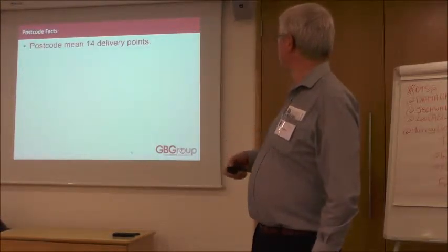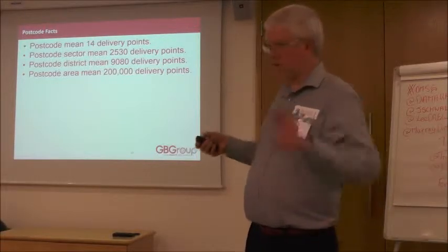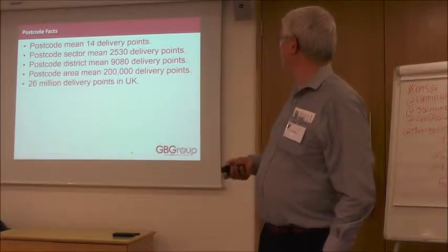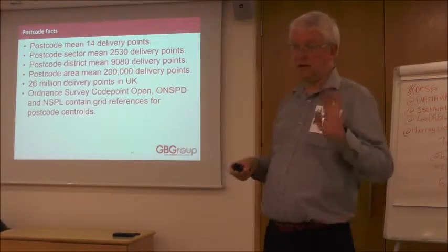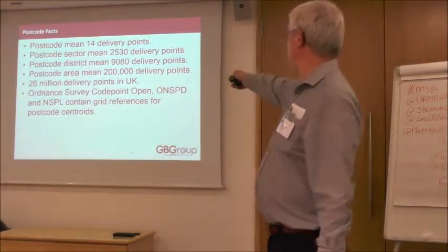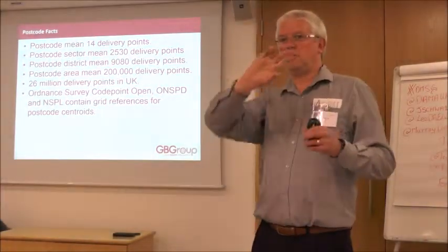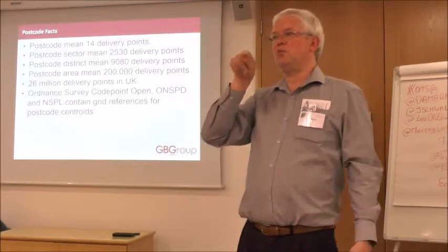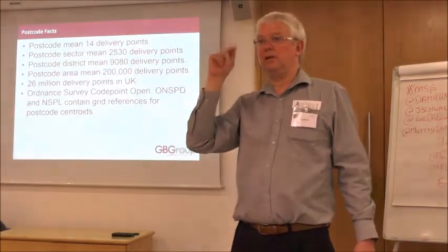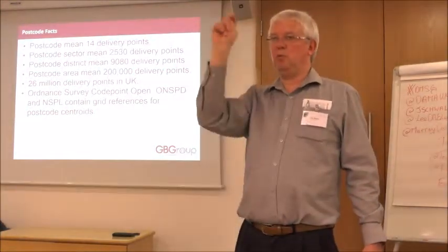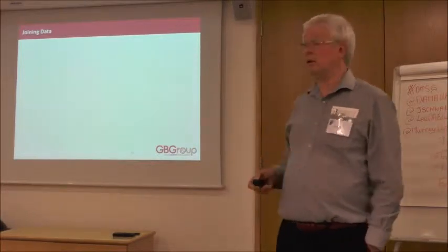Some postcode facts: postcode mean is 14 delivery points, sector is 2,530, postcode district mean is 9,080, and the postcode area is about 200,000. There are 26 million delivery points in the UK. The ONS PD and NSPL contain grid references for what is termed the postcode centroid — roughly in the middle of that shape, but always snapped to the nearest house or delivery point, so it will not be quite the geometric centre. This is what I use predominantly for joining a lot of data sets together.